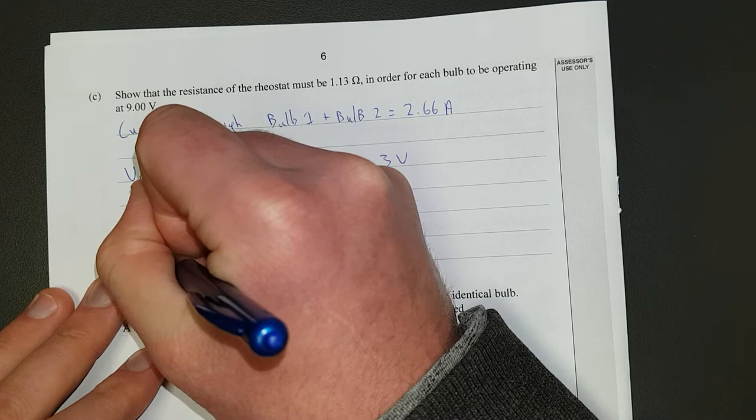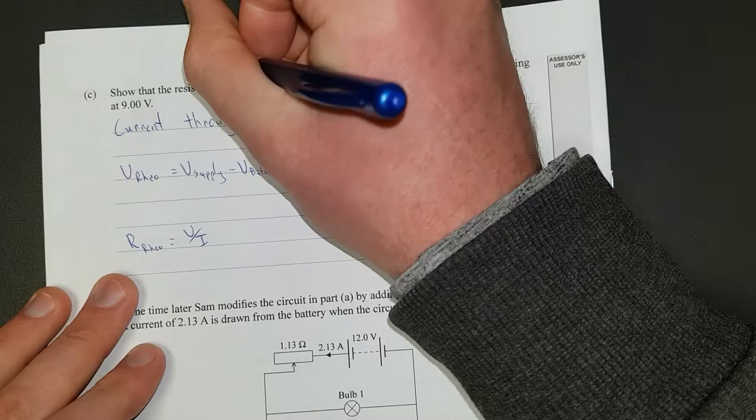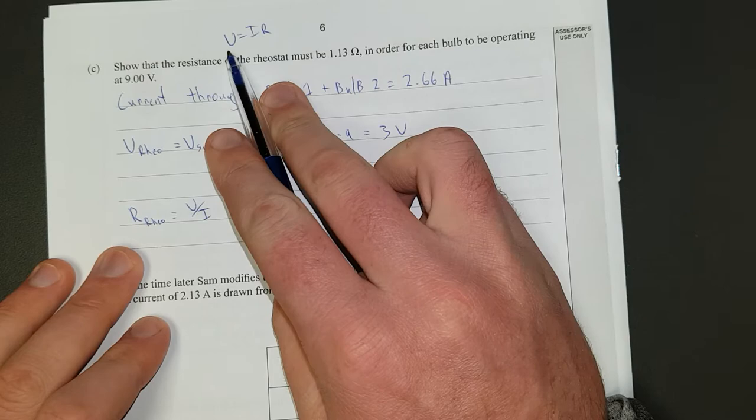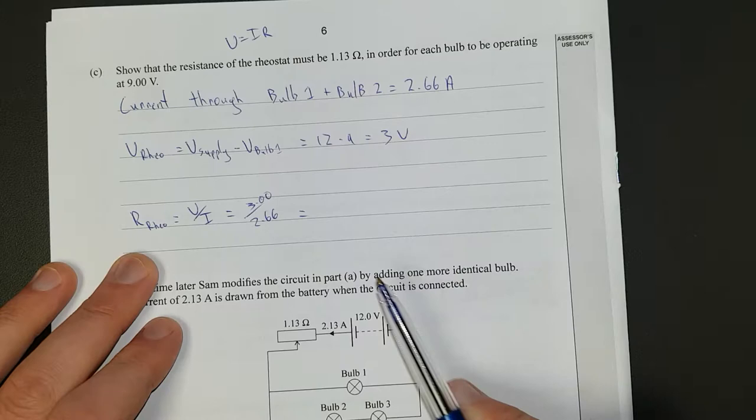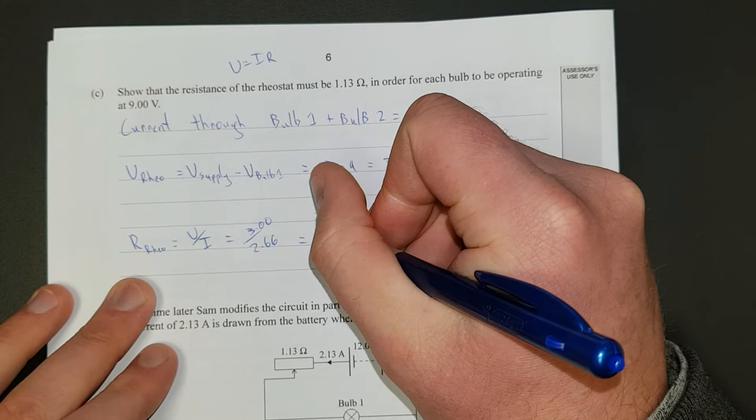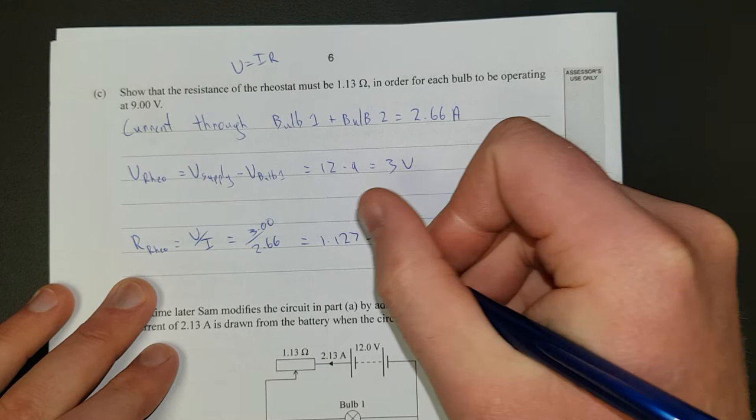So the resistance of the rheostat is just the voltage divided by the current from V equals IR. See that up there? I've rearranged, I've moved the I underneath, because I divided both sides by I, equals 3 over 2.66, and that is equal to 3 divided by that is equal to 1.127 ohms.